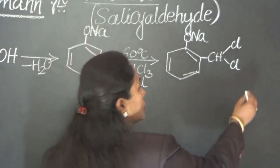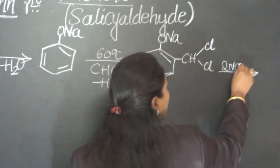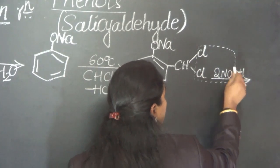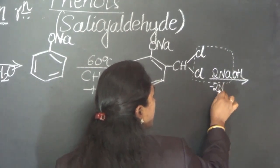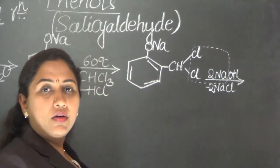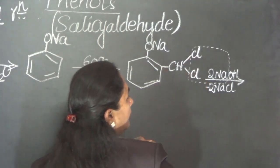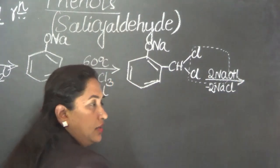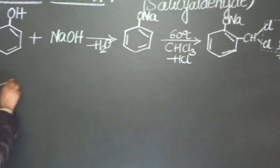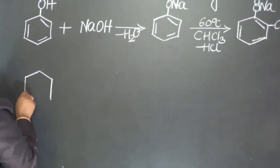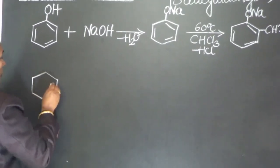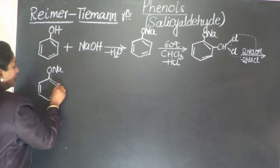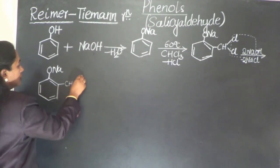The CHCl2 group on the benzene ring then comes in contact with sodium hydroxide present in the solution. The 2Cl present will react with 2Na and come out as 2NaCl — two molecules of sodium chloride go out. In place of the two chlorines, 2OH from 2NaOH take attachment, and CH is now linked with 2OH.